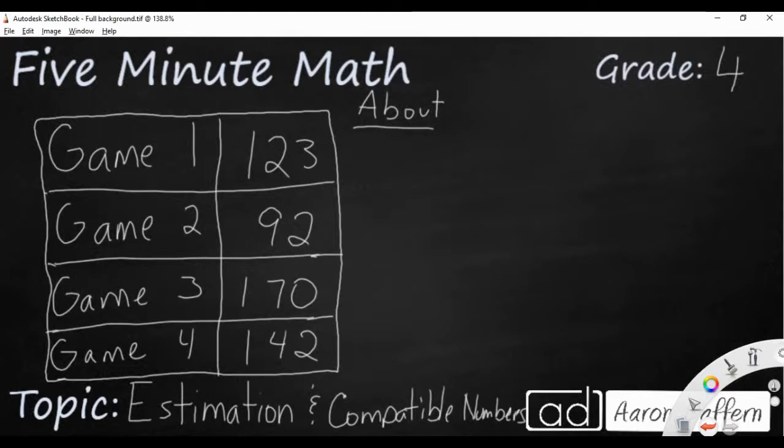There's different ways we can estimate those. Let's say if we want to round, let's go to the largest place. Let's round to the hundreds place. Then we could take each of these numbers. I'm going to take 123, 92, and so on. I'm going to round them to the nearest hundred and see what we get.